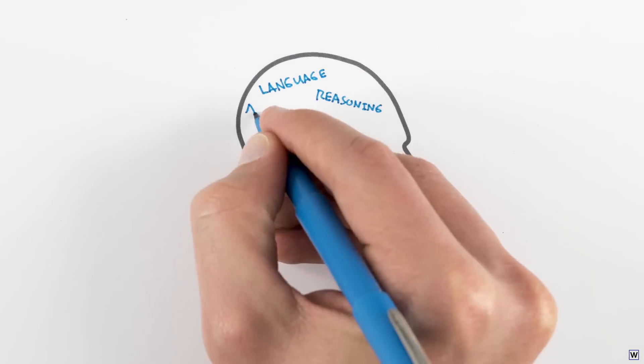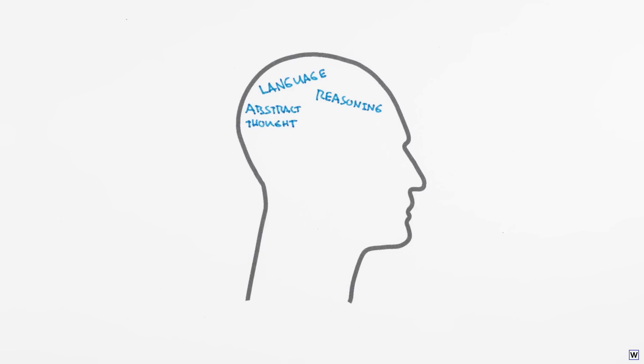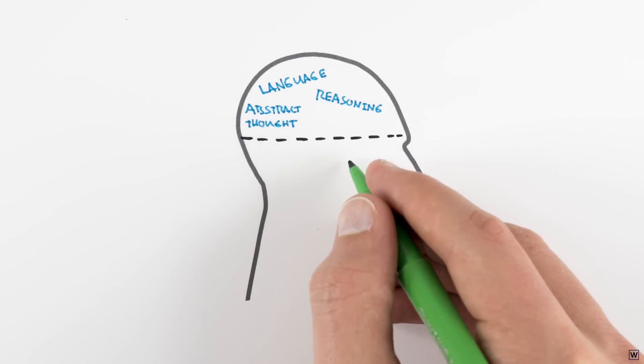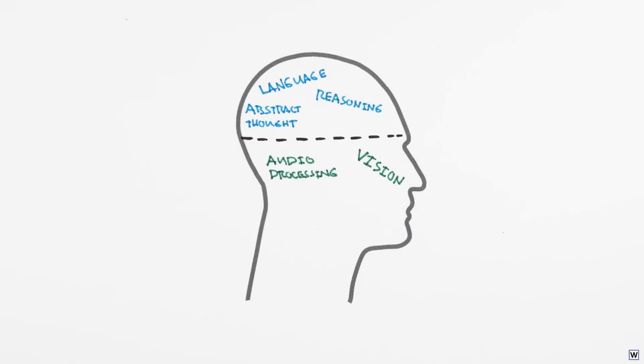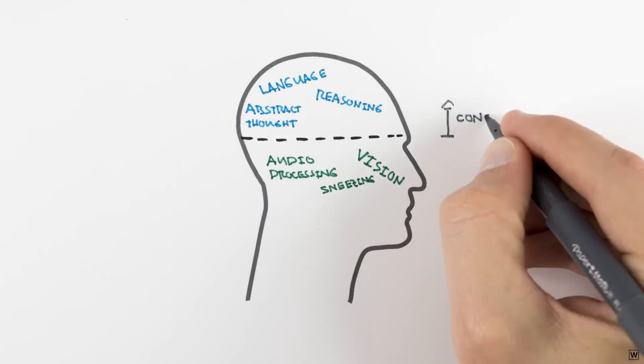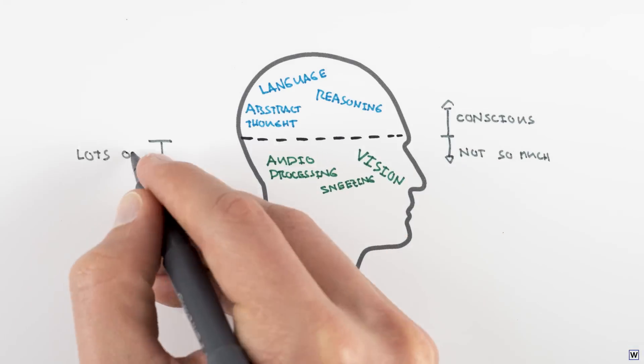Language, reasoning, and abstract thought are certainly central to being human, but that doesn't mean that these skills represent the most sophisticated functions of our brain. There are many key processes in our brain, such as vision, that happen too quickly and too far below the surface of consciousness for us to understand by simply thinking about how we think.